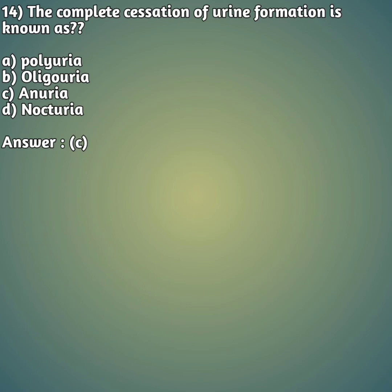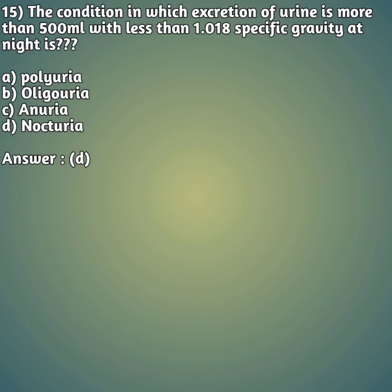Fourteenth question: the complete cessation of urine formation is known as — option A: polyuria, option B: oliguria, option C: anuria, option D: nocturia. The right answer is option C — anuria. If a person is not producing any urine at all, that condition is termed anuria.